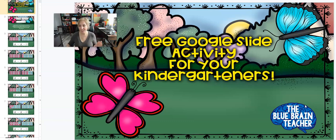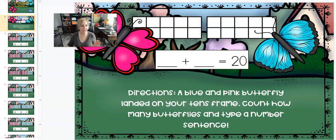So I just wanted to show you what your kids are going to do. This is a visually adding to 20 activity for them. They are going to count how many pink butterflies and blue butterflies are on the tens frame, and then they are going to indicate the number here where it shows.